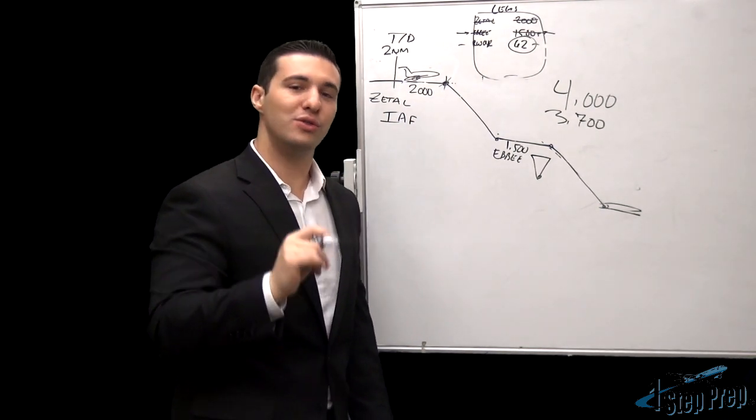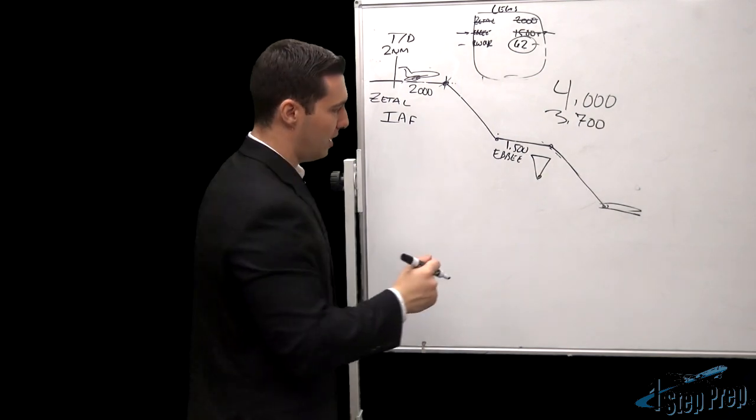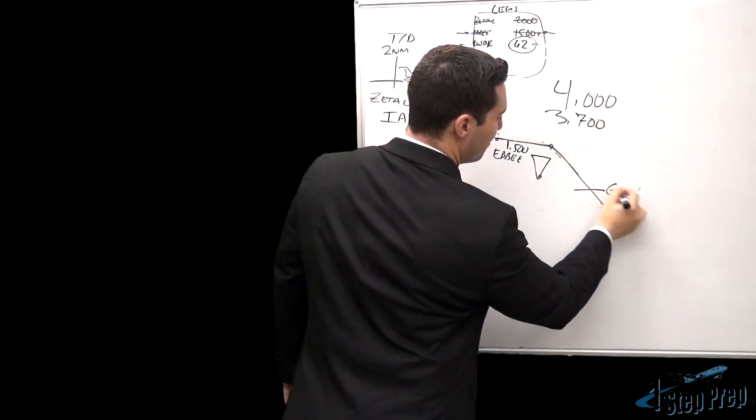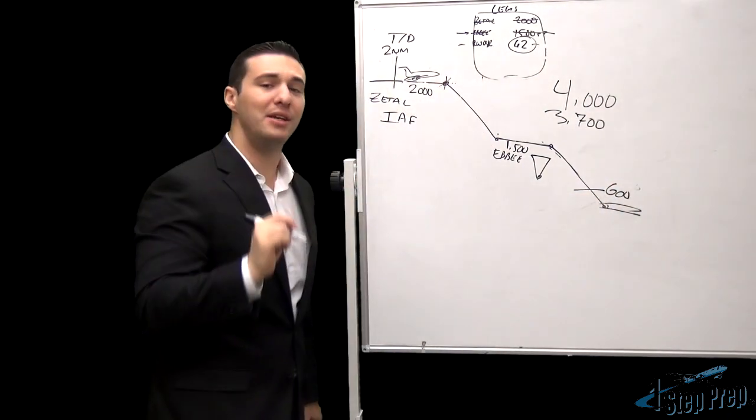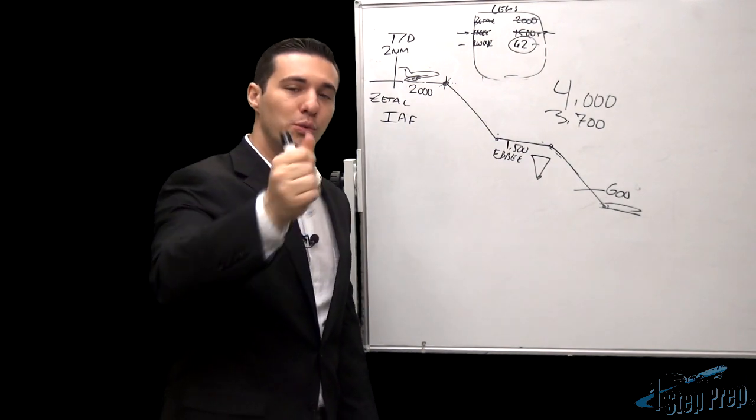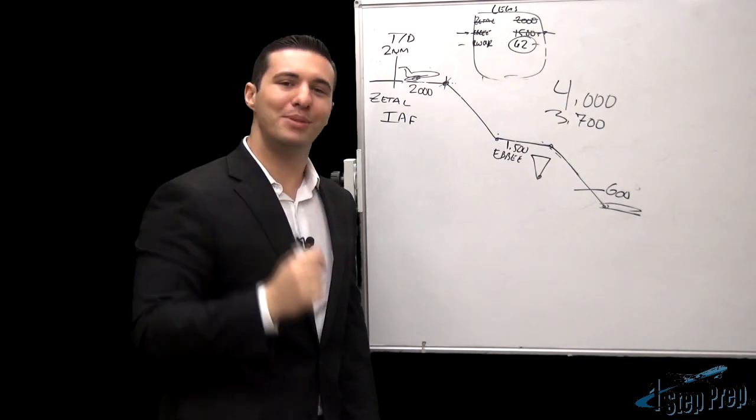Now is when you're going to set the missed approach altitude. And of course, remember you had 600 set in the MCP. The next thing we're going to do is smoothly roll this MCP altitude up to 4,000 feet.